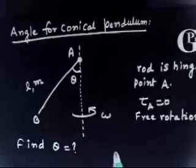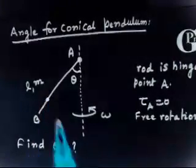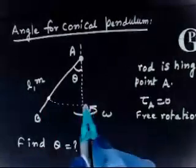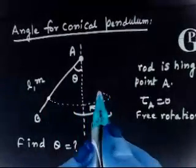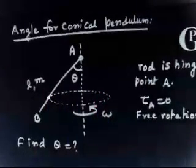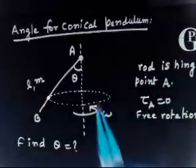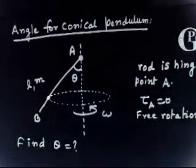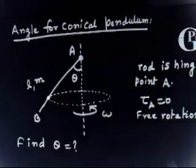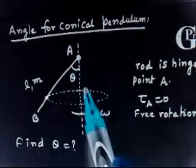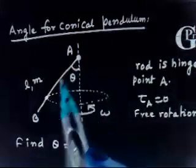Now if you see, any point on the rod is moving in a circle. So this will be the circle in which that point is moving. At any point of the rod it is moving in a circle. Now why is this rod in equilibrium? This rod is in equilibrium making angle theta.